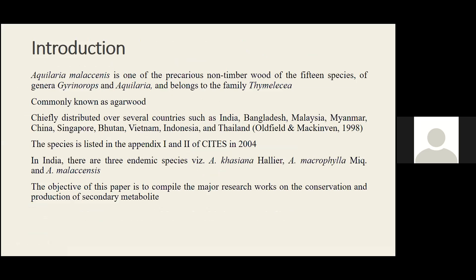Aquilaria malaccensis is a fragrant timber wood which belongs to the Thymelaeaceae family. It is commonly known as agarwood and is one of the most costly woods in the world, with high market demand because of its fragrance compounds obtained from this species.